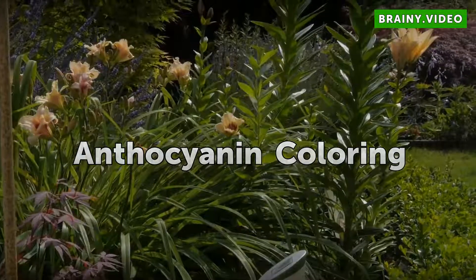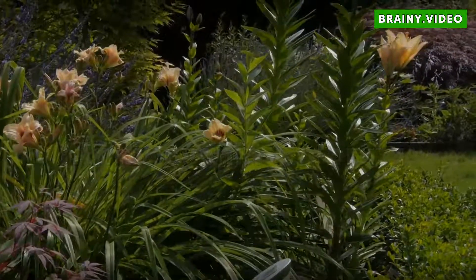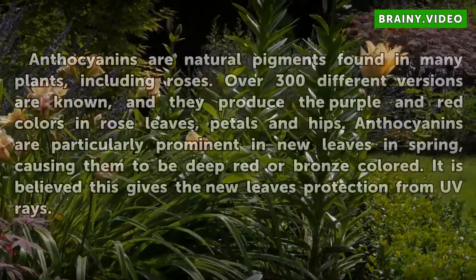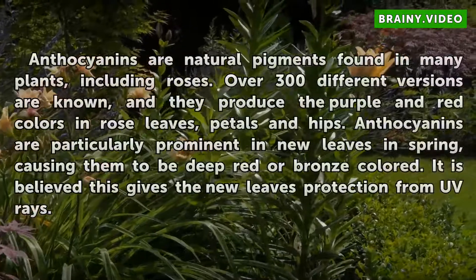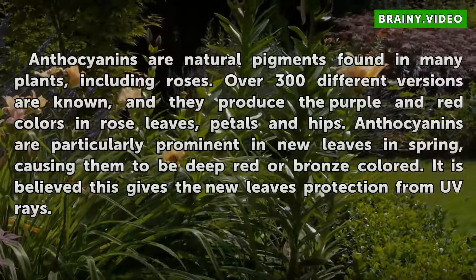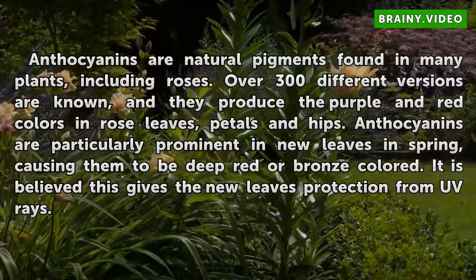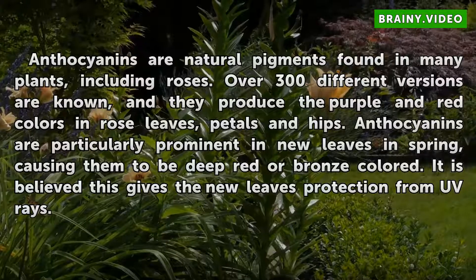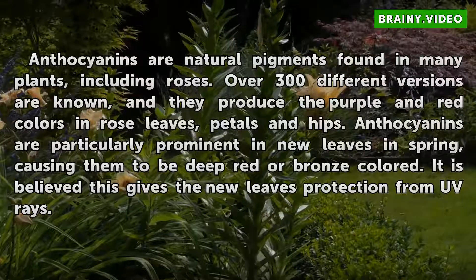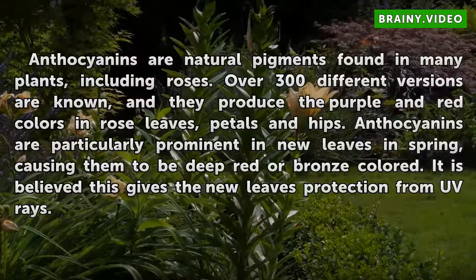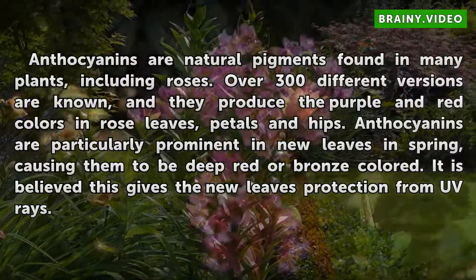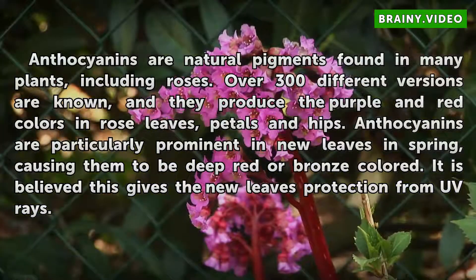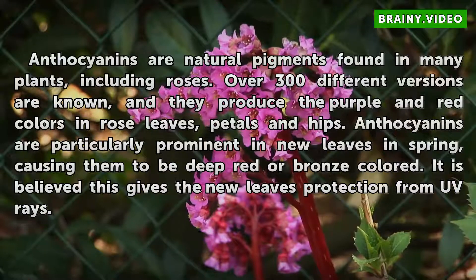Anthocyanin Coloring. Anthocyanins are natural pigments found in many plants, including roses. Over 300 different versions are known, and they produce the purple and red colors in rose leaves, petals and tips.